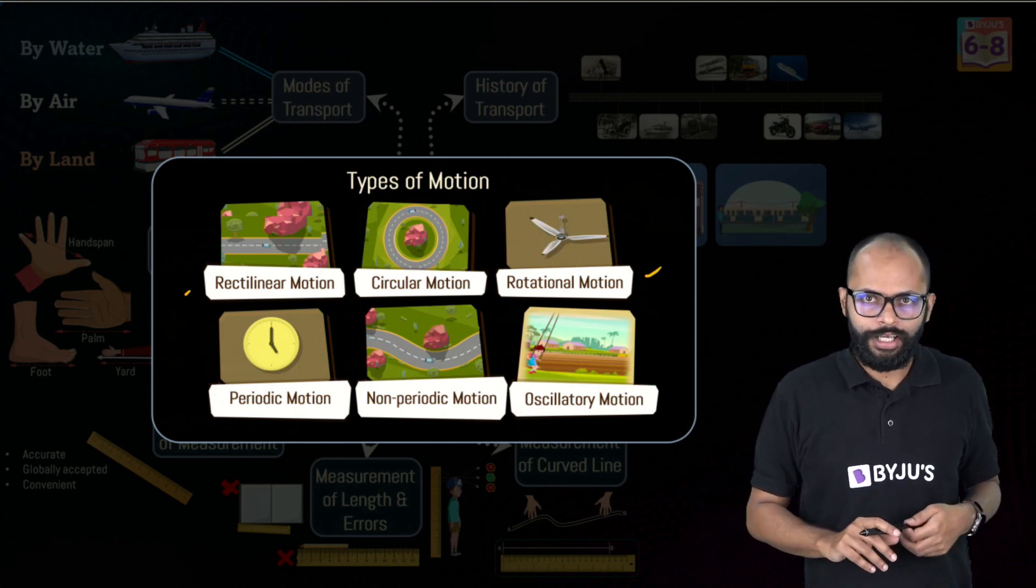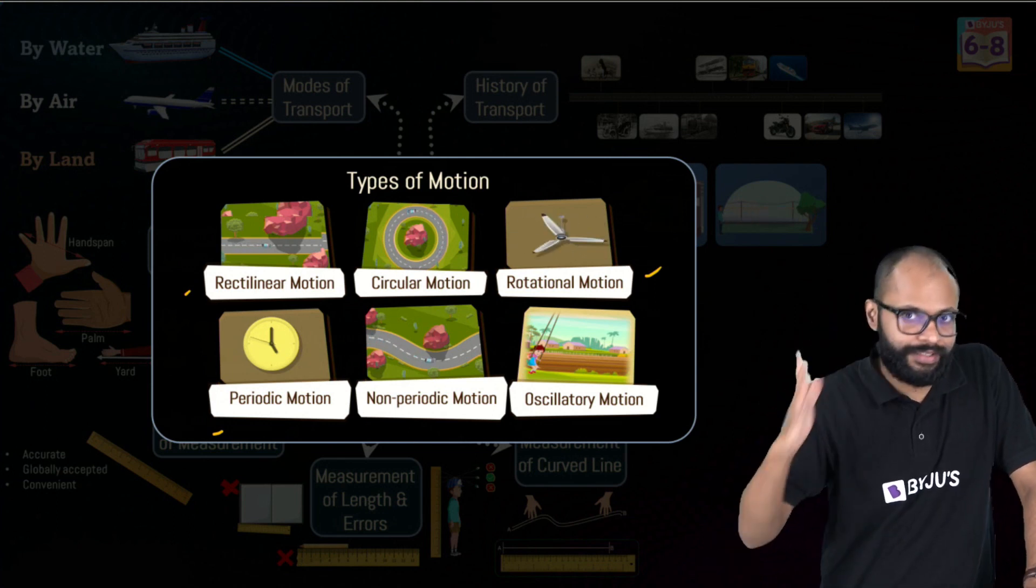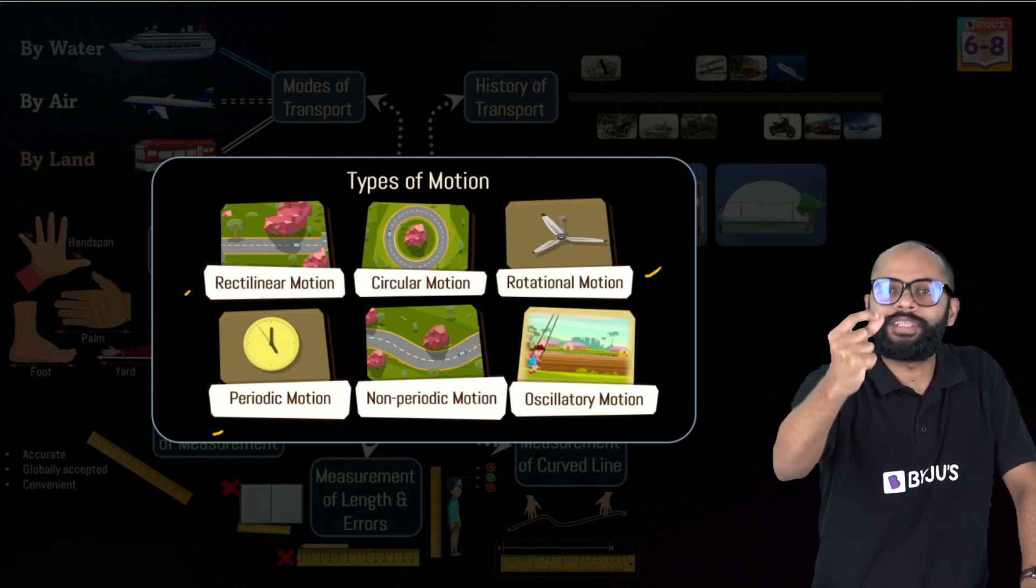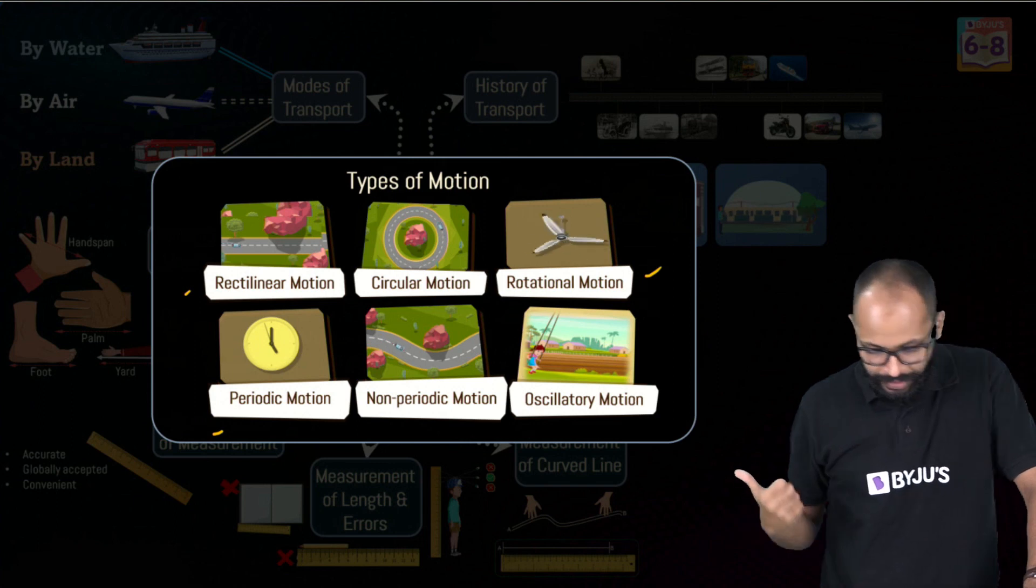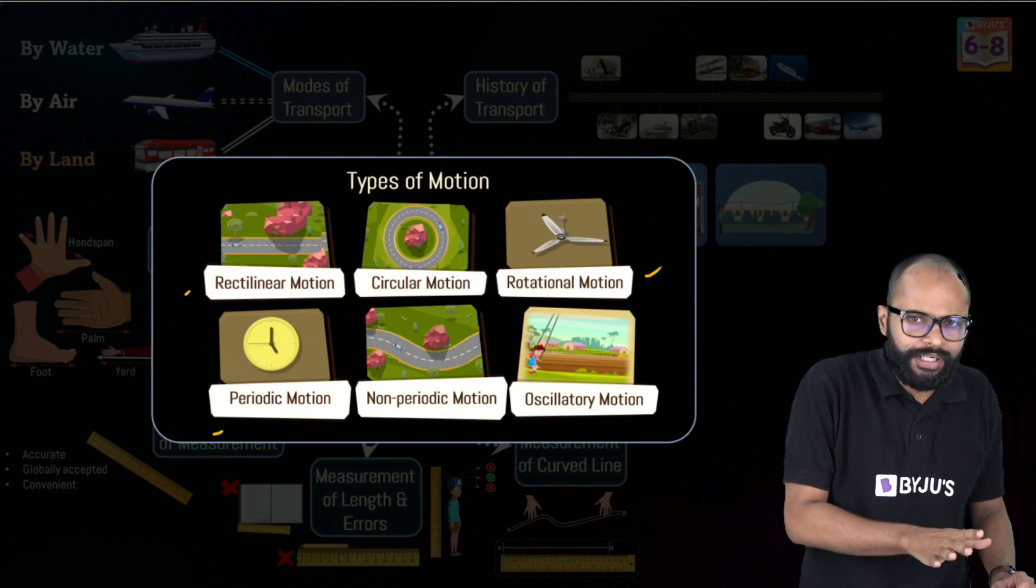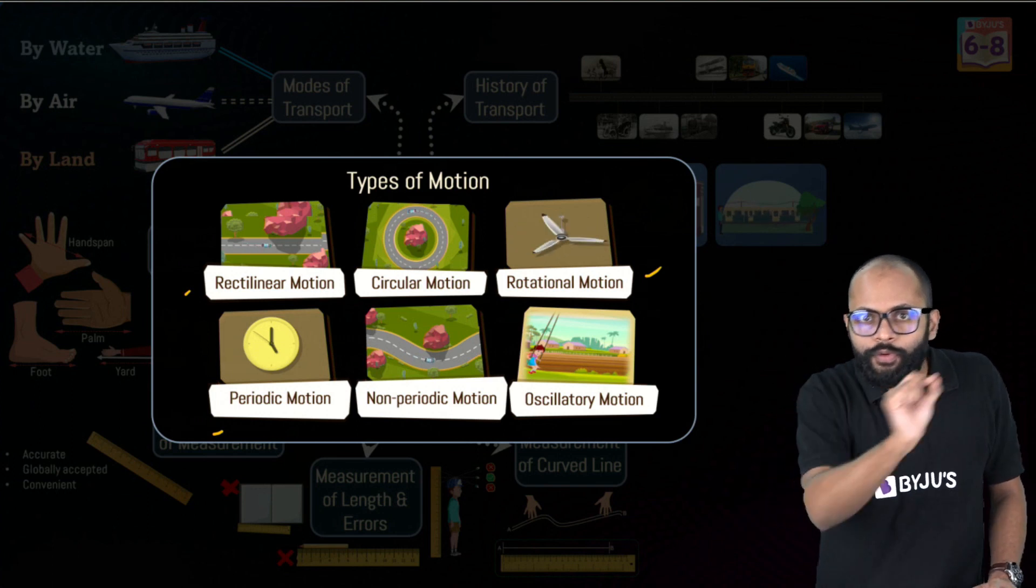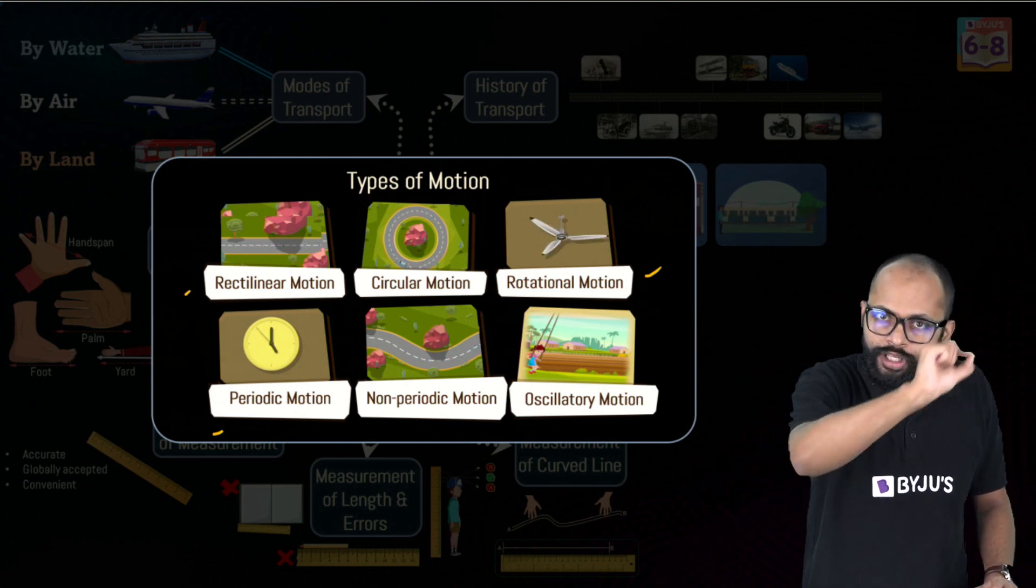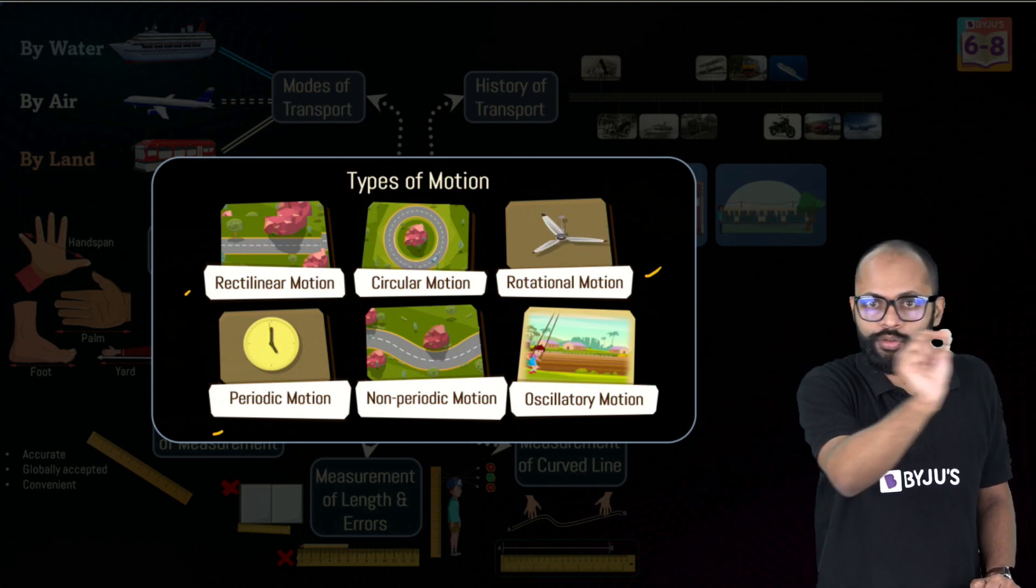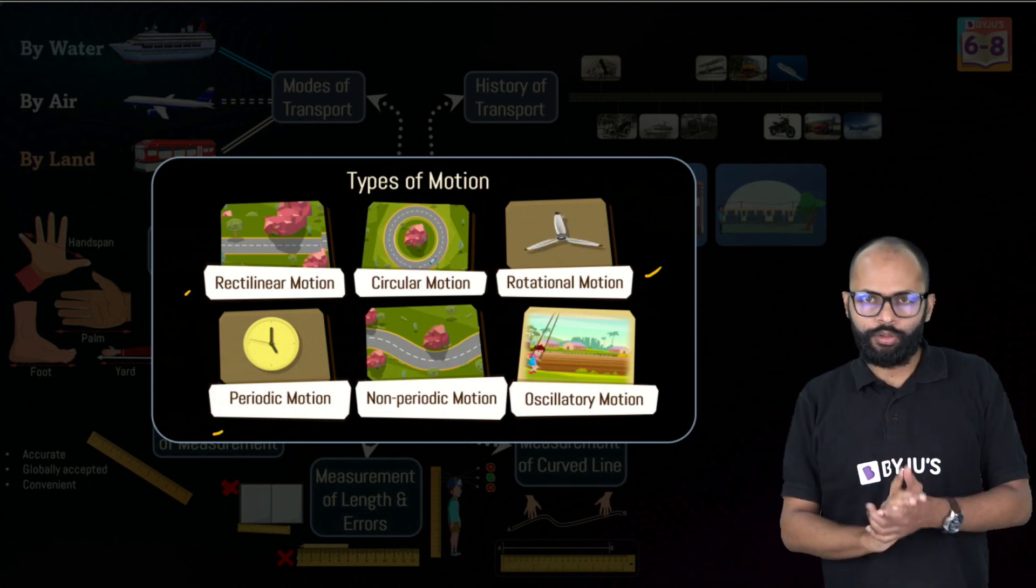Periodic motion: if the motion repeats itself after a fixed interval of time, it is periodic motion. It's time-related. Non-periodic: which does not depend on time, which does not follow time, which does not repeat itself after fixed interval of time, that is non-periodic motion. Oscillatory is to and fro motion. You have to reach back to the same point covering the same path. To and fro motion is called oscillatory motion.